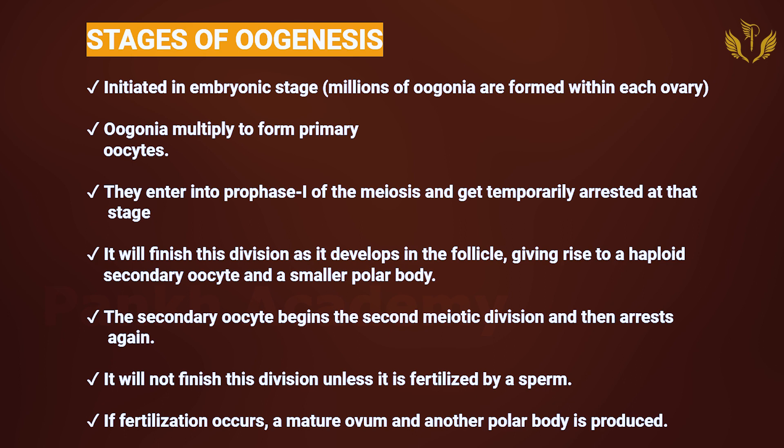The stages of oogenesis are initiated in the embryonic stage. Many millions of oogonia are formed within each ovary. These oogonia multiply to form primary oocytes.